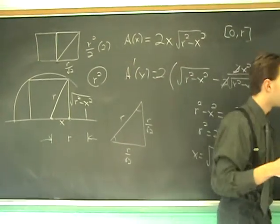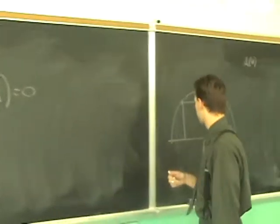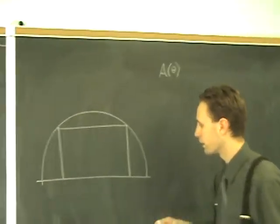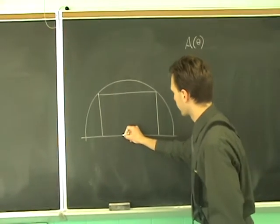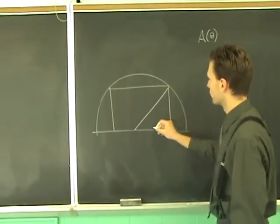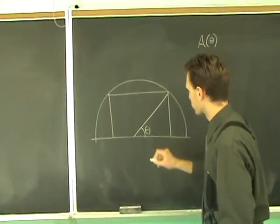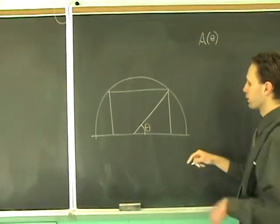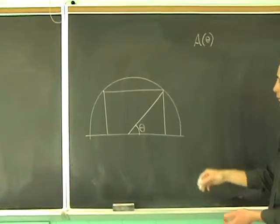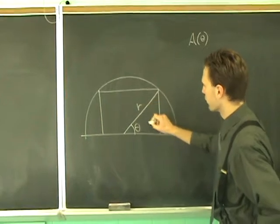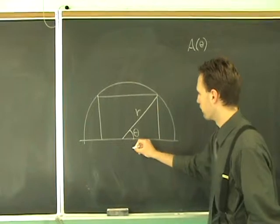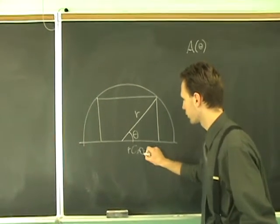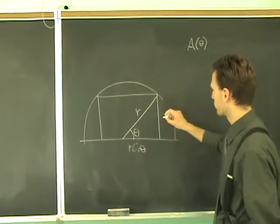But there's also another way to do this by not making that your variable. Another way to do it, I like this one a little bit better, is you can model the area as a function of theta, the central angle. If that's theta, and this is still R, what's the area of the rectangle? Well, it's still going to be base times height. The base is R cosine theta, and the height is R sine theta.